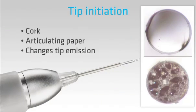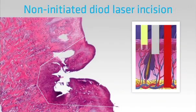Now let's return to the process of initiating the tip. We can do this by wiping the tip across a cork or over carbon articulating paper. The purpose of initiation is to change the pattern of energy emission — in simple terms, it constrains the laser energy in space. The material coated onto the end of the tip from the cork or carbon paper becomes very hot when the laser is used. We can use the same method to coat the side of the tip for doing an external bevel cut during a gingivectomy. If we don't initiate the tip, the laser energy will go further into the tissues and we will get more collateral damage. This histological slide of a laser cut sample of soft tissue shows this damage on the side of the incision.